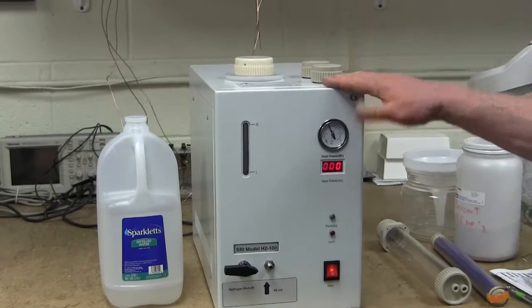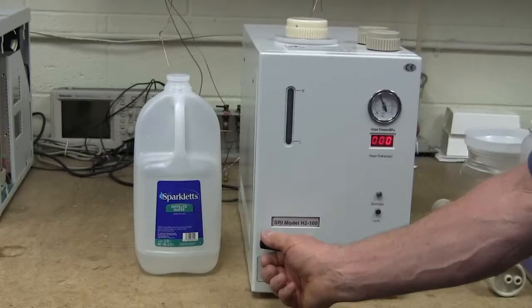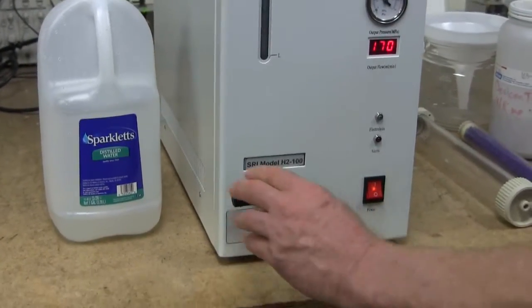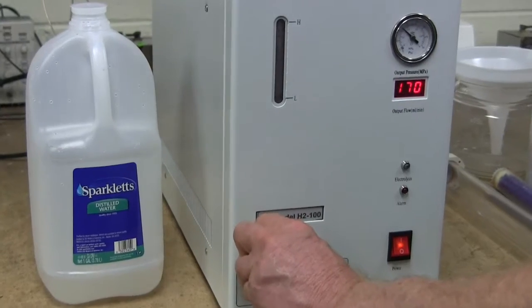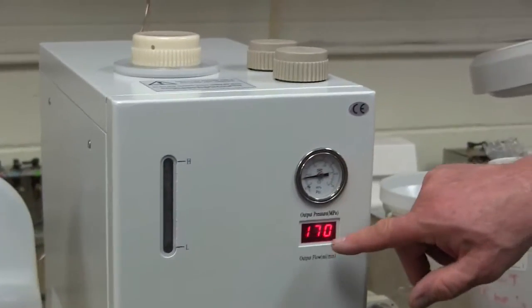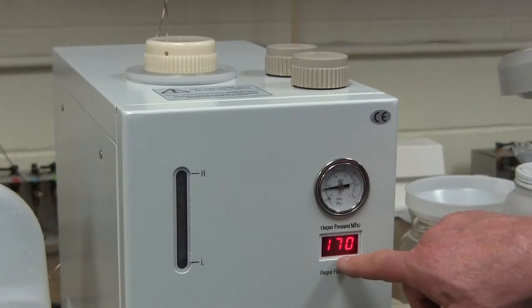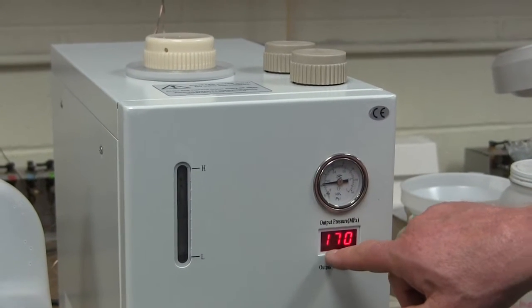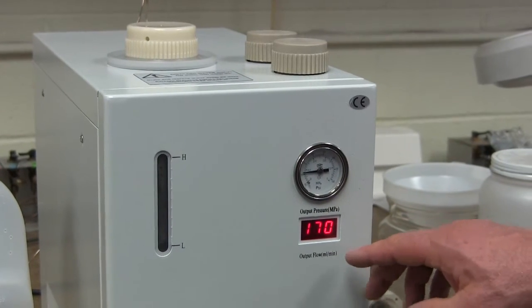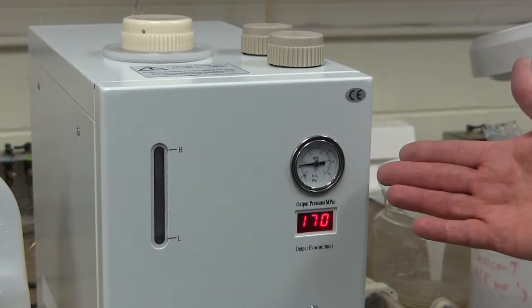So it comes in this box. There's a gas on and off switch here. If I turn this, you can hear the hydrogen coming out and you can see the pressure gauge dropping. And now you can see the output flow, which is displayed here. 170 means 170 milliliters per minute. So it's making hydrogen right now.